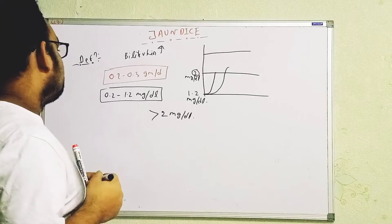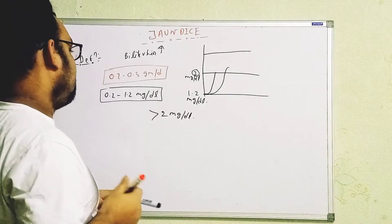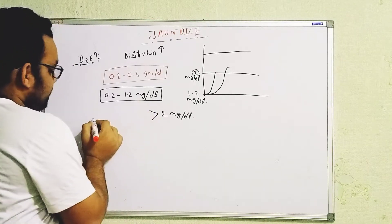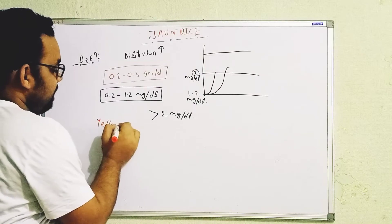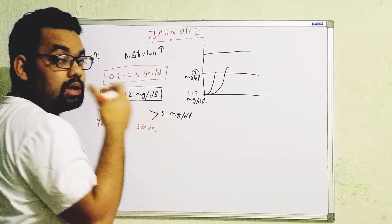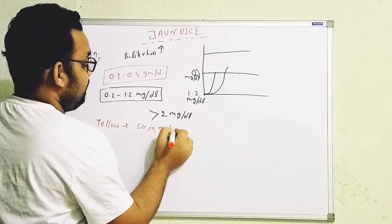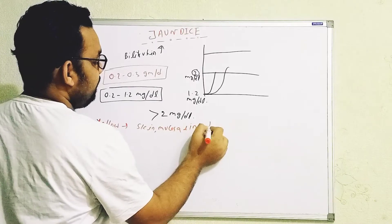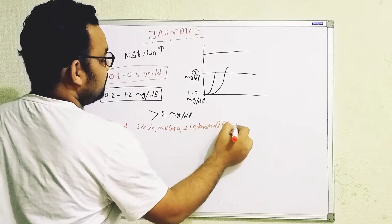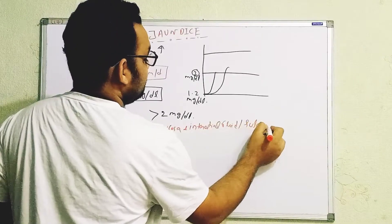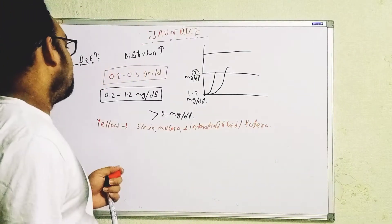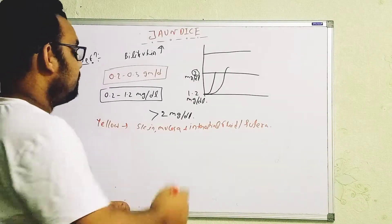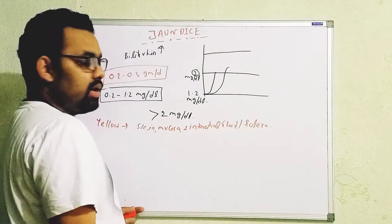We can classify jaundice in terms of increased bilirubin levels in our blood, along with yellow colorations seen in the skin, mucosa, interstitial fluid, and also importantly in the sclera of the eye. So we can define jaundice as: whenever there is an increased level of bilirubin, we see yellow colorations of the skin, mucosa, interstitial fluid, and sclera.